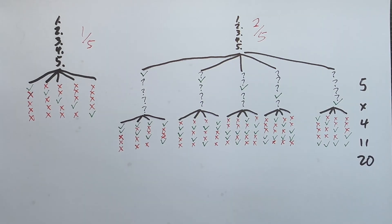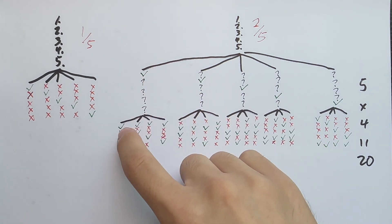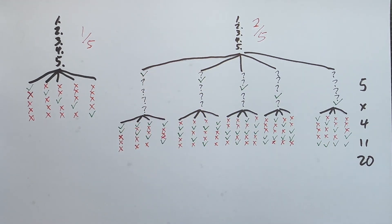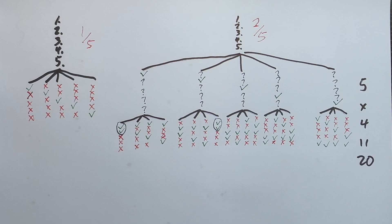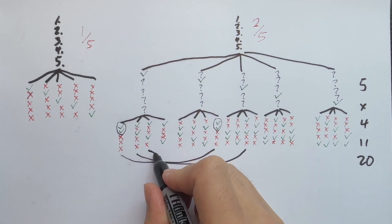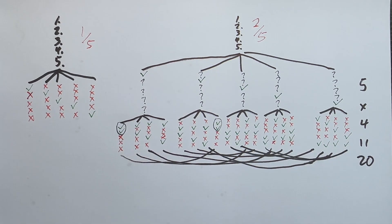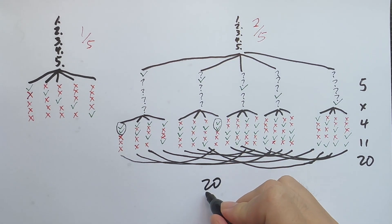Wait, we counted ten before — why is it twenty now? We've actually overcounted. When picking the correct answers, picking question one then question two is the same as picking question two then one. The final correct answer set is still the first two, yet we've counted it twice. To get the actual number, we divide by 2, because every correct answer set has two possible orderings. So the number of ways to get a score of 2 is 20 divided by 2, which is 10.